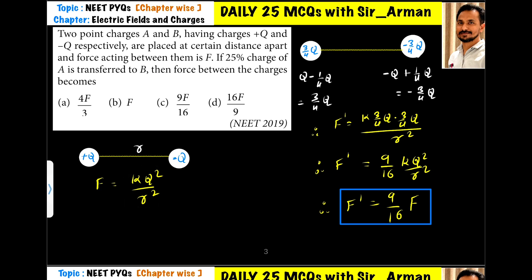Now what is happening: we are transferring 25 percent of charge of A. Since A is positive with total charge Q, its 25 percent is 1/4 of Q, which is transferred to B. So the remaining charge in A is 3/4 Q because 25 percent we have transferred.